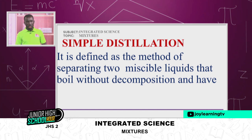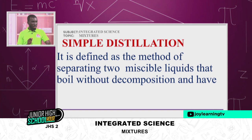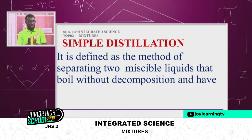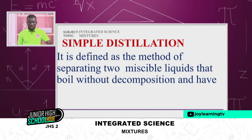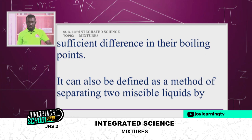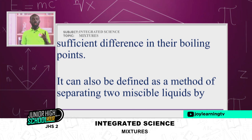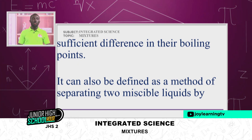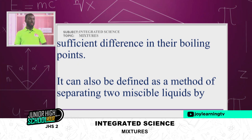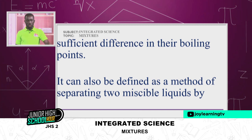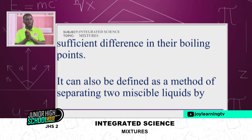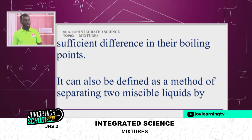One: simple distillation. It is defined as the method of separating two miscible liquids — meaning they have blended completely, like water and Sprite — that boil without decomposition and also have sufficient difference in their boiling point. I need two different liquids: water and alcohol. Water boils at 100°C, while alcohol boils at a lower temperature of 78°C. I pour my alcohol into my water whereby I have a miscible mixture.